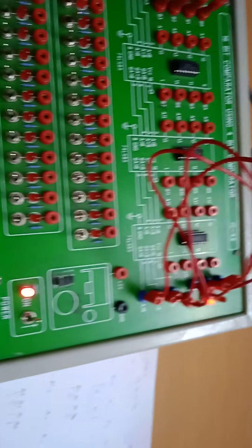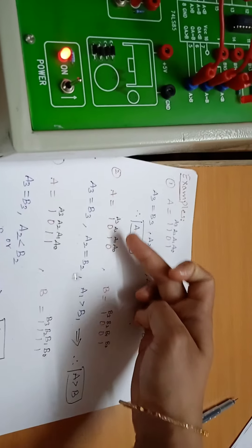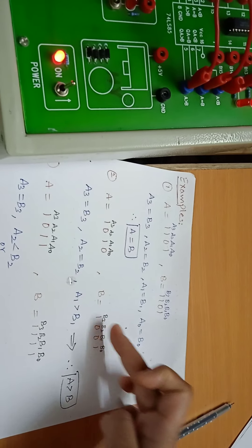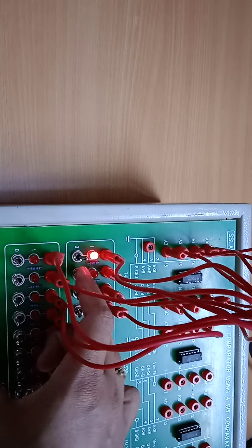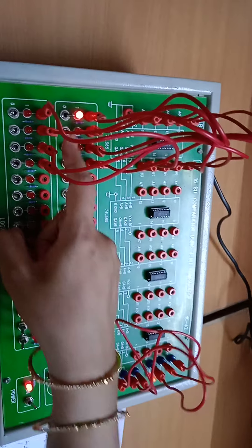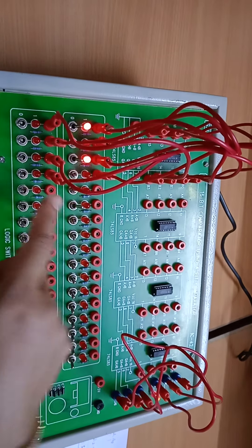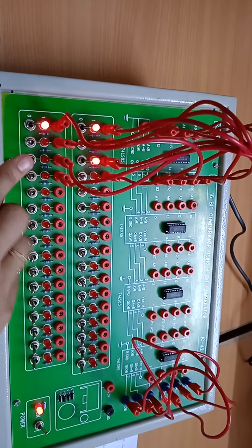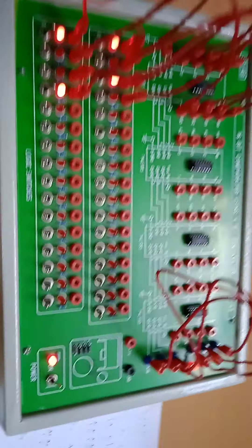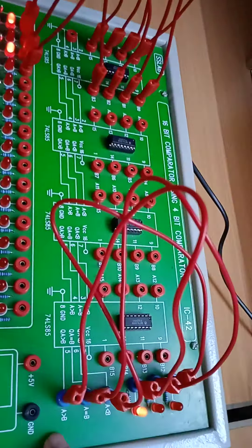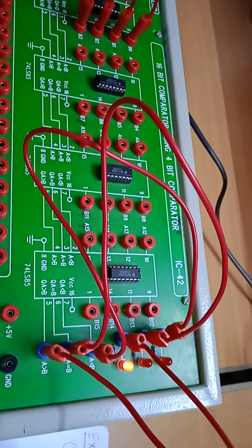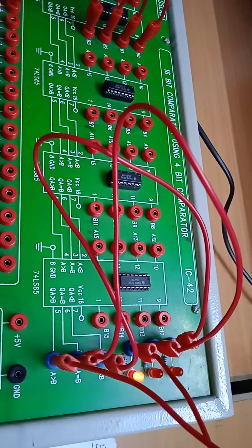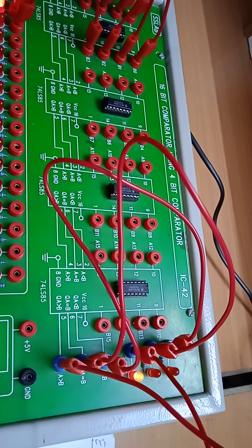Next, let us verify the second example: A = 1, 0, 1, 0 and B = 1, 0, 0, 1. Setting the switches accordingly on the trainer kit, you can see the A greater than B LED is glowing — the same result we obtained in the theoretical calculations: A greater than B.